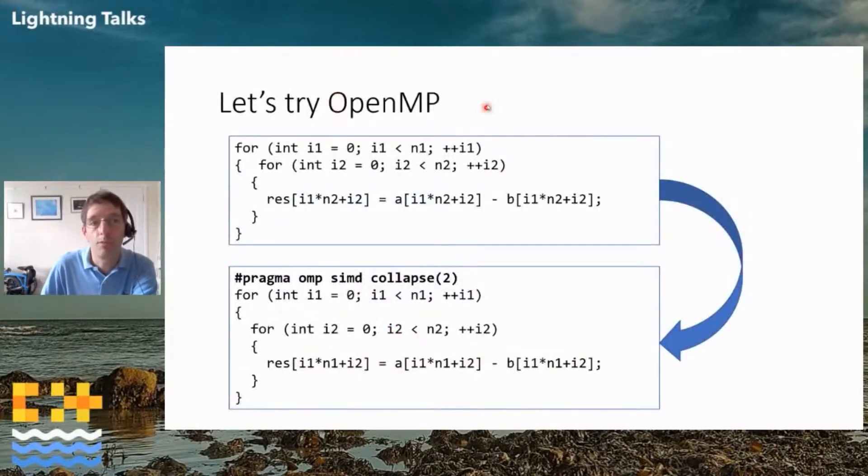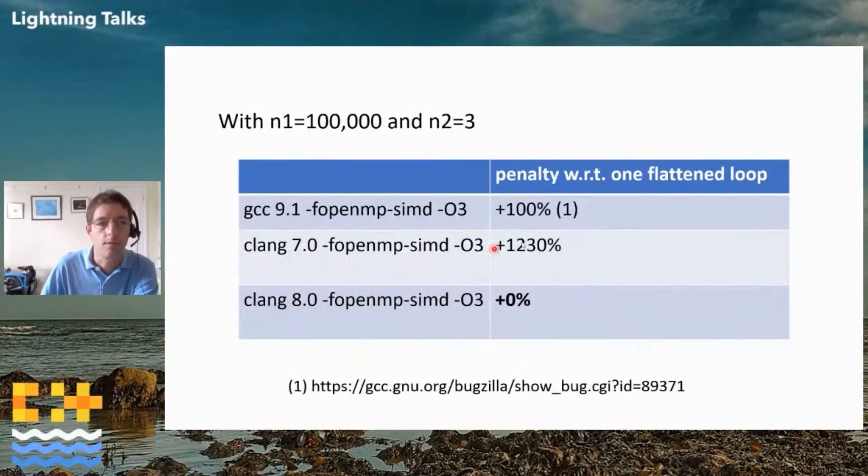So here comes OpenMP to the rescue. You've got this pragma, which is exactly what I needed, which is like collapse with two loops. That looks exactly like the perfect solution. So I ran a new benchmark. I tried Clang7 at the time, and you can see it does exactly the wrong thing. It's 10 times slower. It turns out the bug is fixed in Clang8.